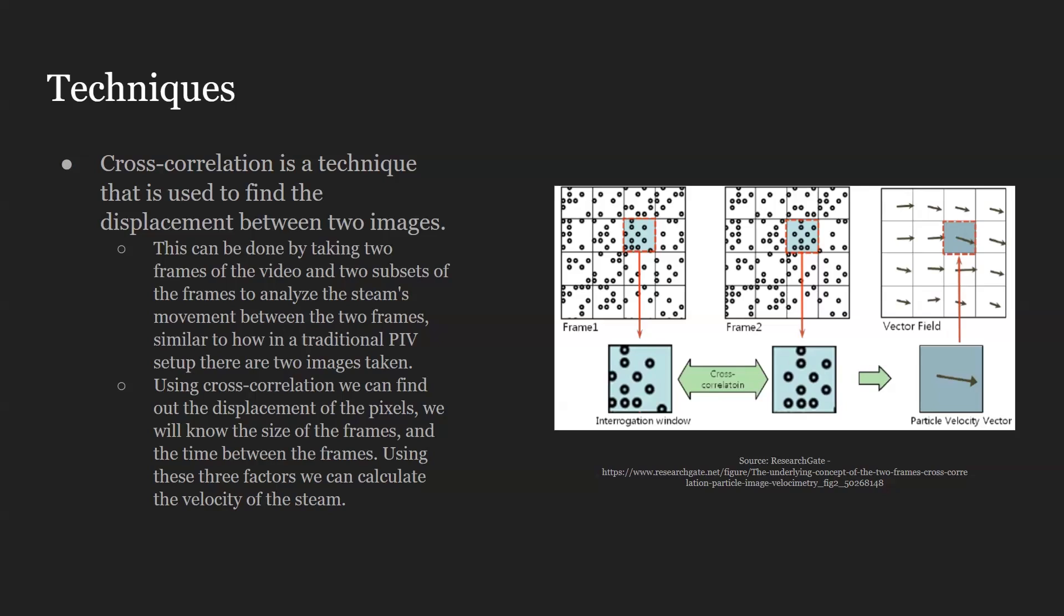We had to divide the image into subsections, and then perform a cross-correlation in each square between the two images so that we could get a displacement value in each of the squares.